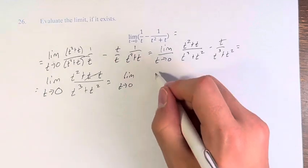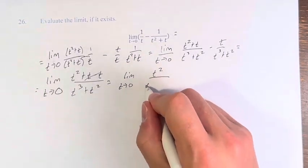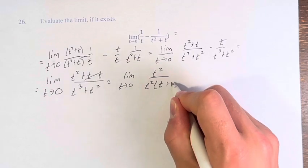t minus t is 0, so we have t squared over—in the denominator we can factor out a t squared to give us t plus 1.